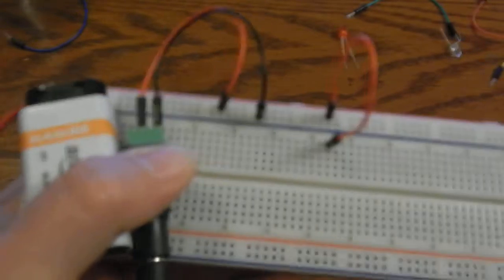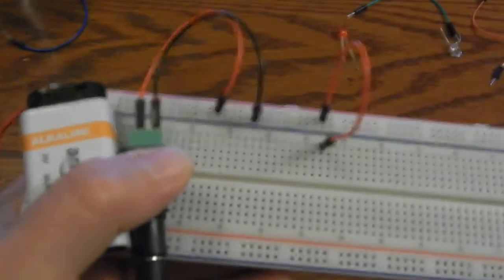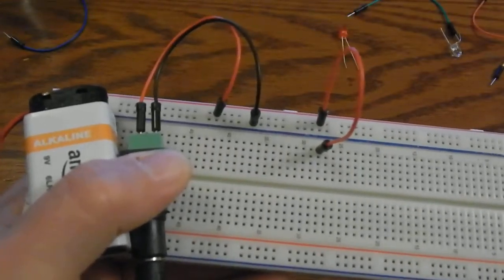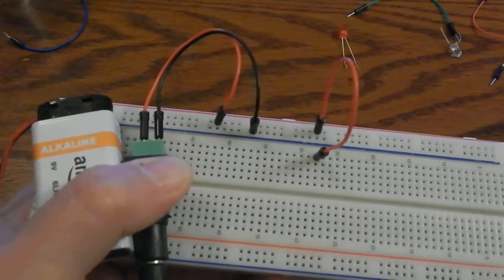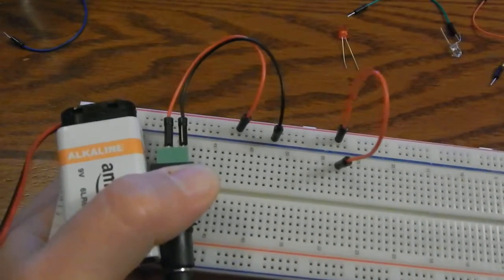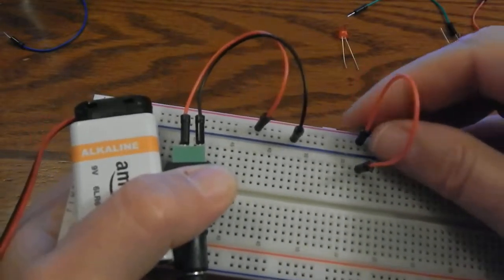I'm gonna show you the same circuit as I just showed you, using a resistor to light up an LED from a 9-volt battery. The first time I did it, I took the power